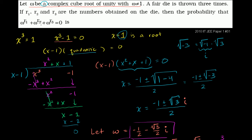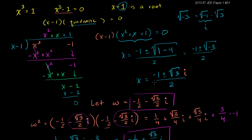In the last video, we started on this problem where we said let omega be a complex cube root of unity, and omega cannot be equal to 1. We figured out what all of the complex cube roots of unity were. We knew that 1 was one of them, and we used that to factor out this third degree equation. We figured out the other cube roots of unity were negative 1 plus or minus the square root of 3i over 2.